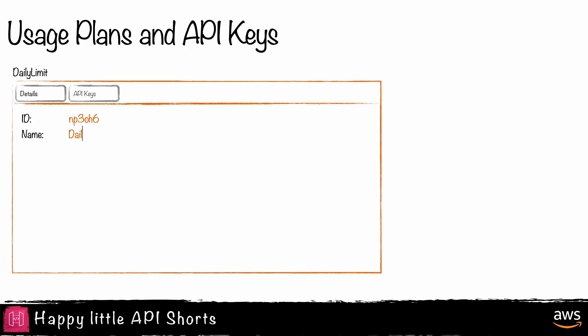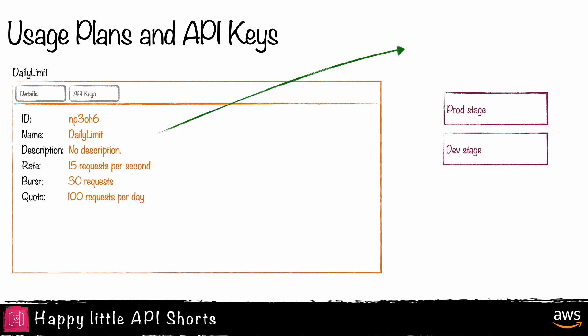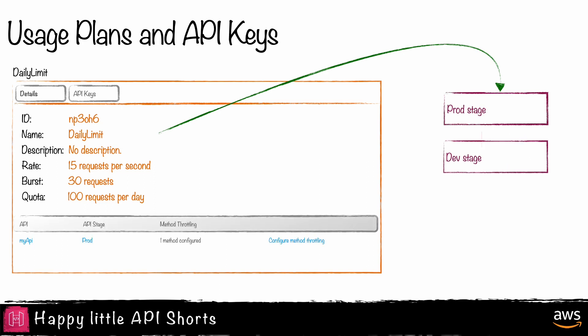Usage plans are applied to specific stages on API Gateway REST APIs. However, developers can also apply throttling at the method level. These method-level settings override the stage settings.